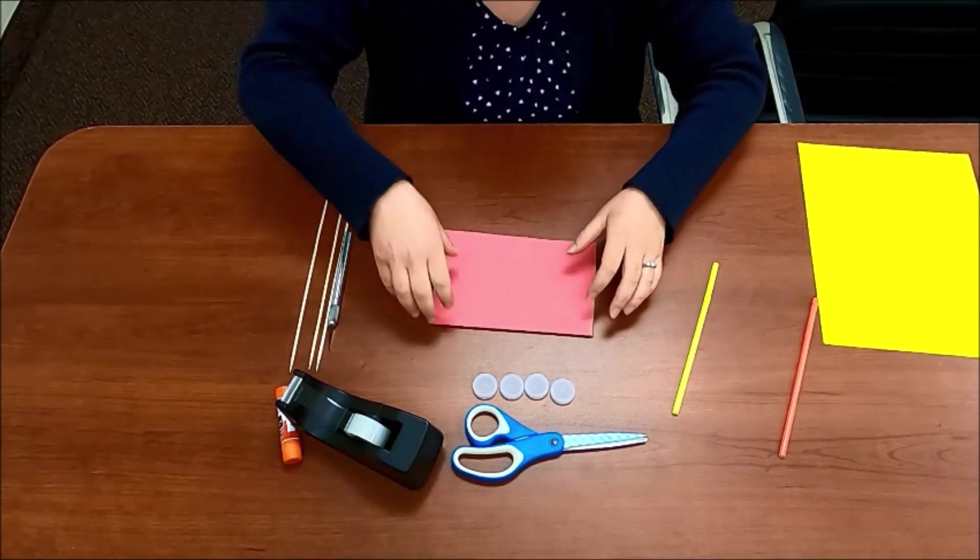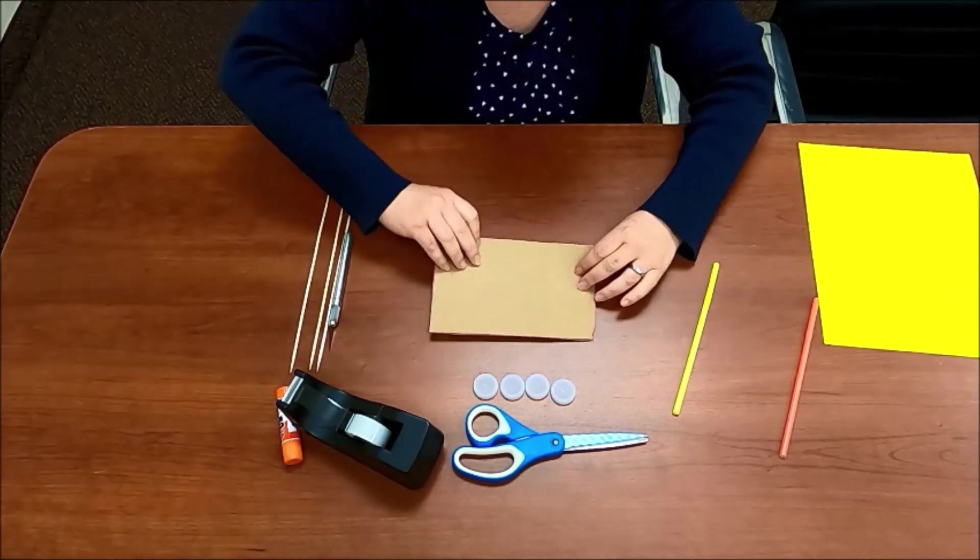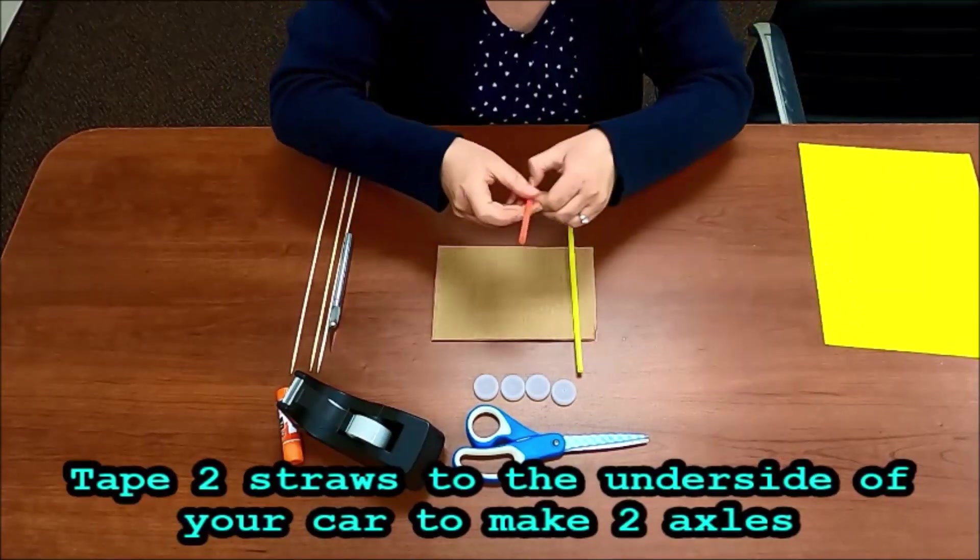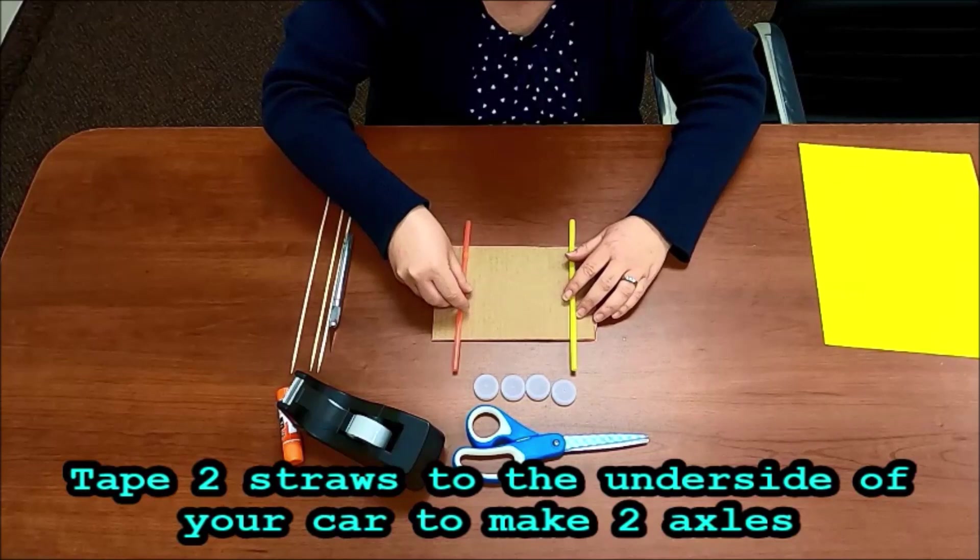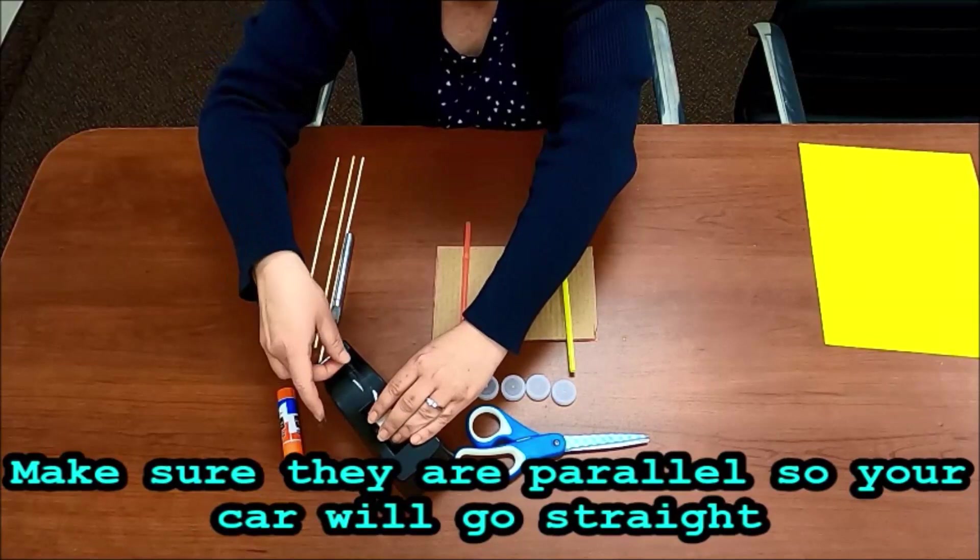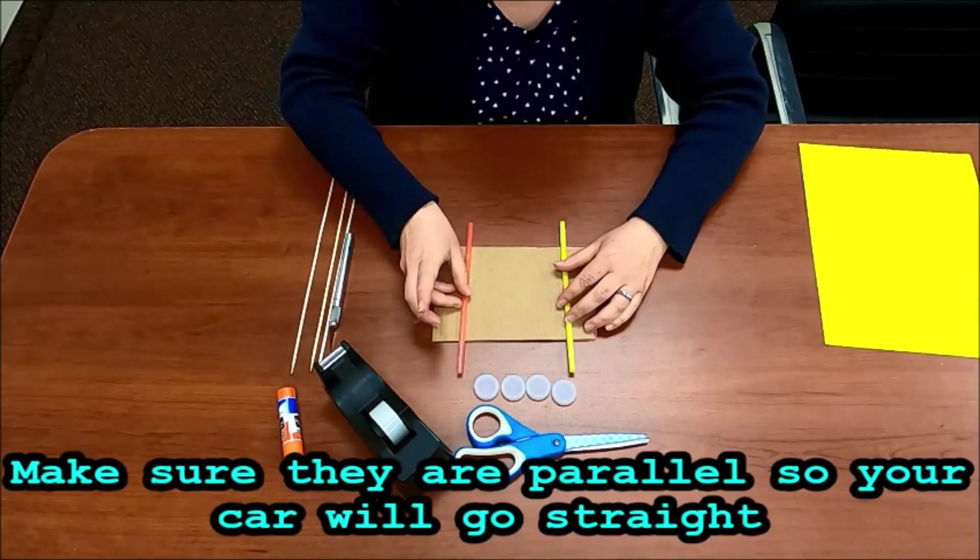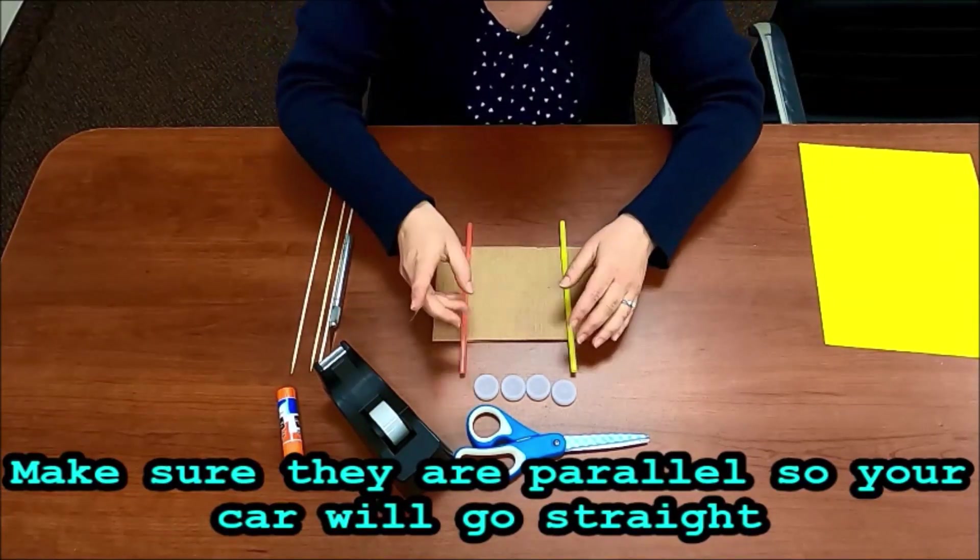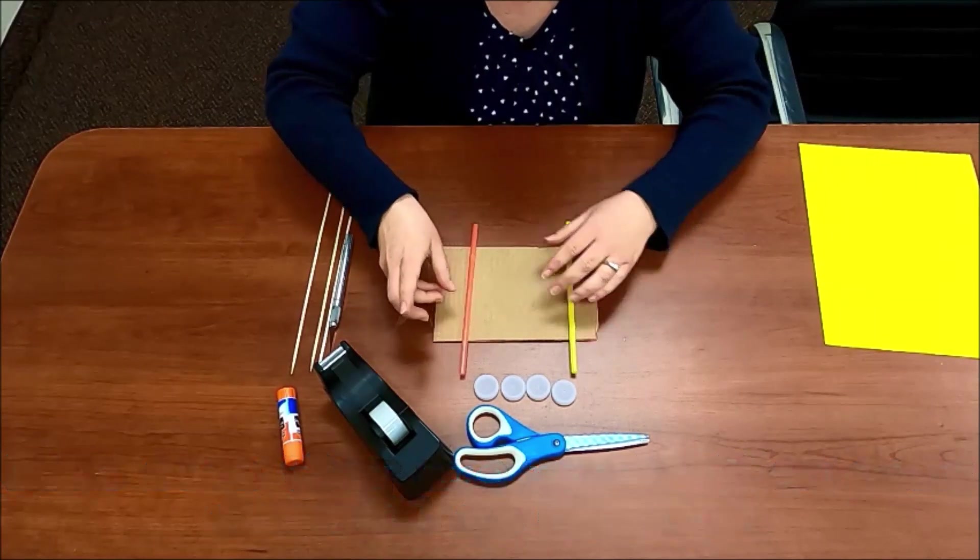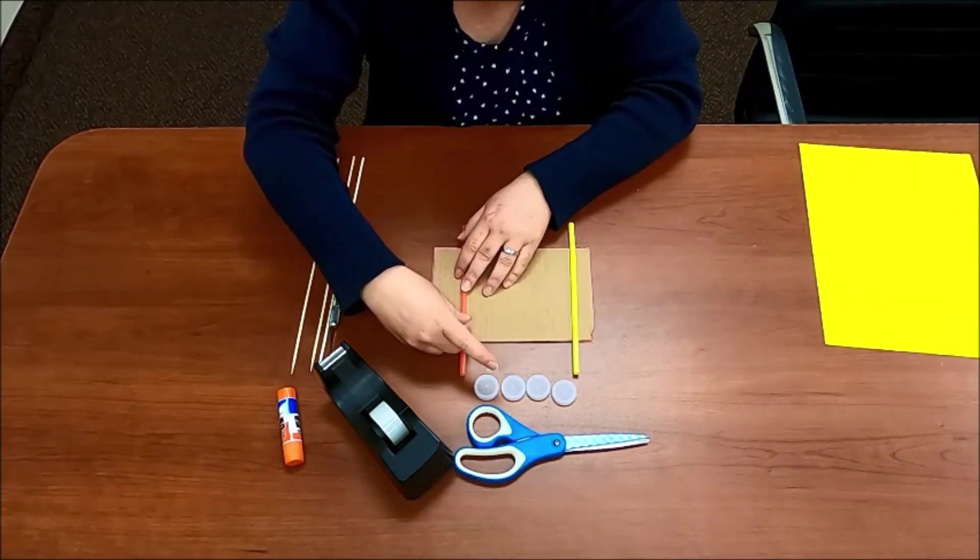Okay, you're gonna want to let that dry and then you're gonna flip it over and what you're gonna do is you're going to tape these two straws about this far apart and you want them to be parallel. That means they are both facing the same way and they're equal distance apart. Okay, so do it the best that you can.